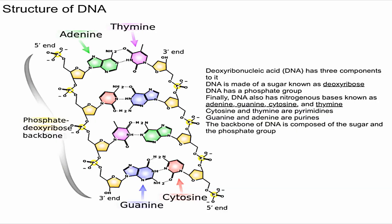In this video I'm going to briefly explain the structure of DNA and essentially what DNA is made of. DNA stands for deoxyribonucleic acid. It's called deoxyribonucleic acid because DNA has a sugar known as deoxyribose, while RNA is made of ribose.